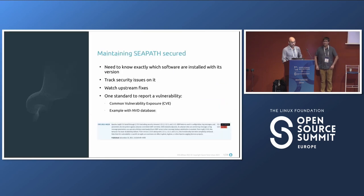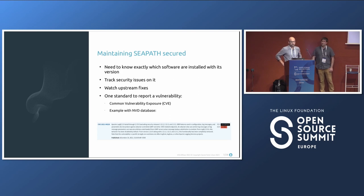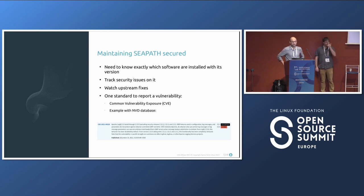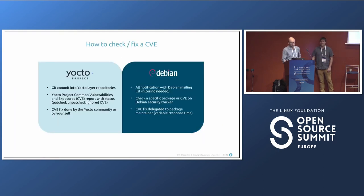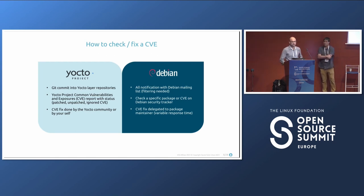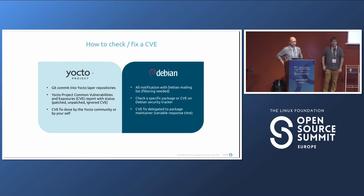We want to maintain C-Pass quality by tracking security issues and watching upstream fixes. Even with many tests, new CVEs always emerge. CVE stands for Common Vulnerability Exposure — the well-known Log4j CVE is a good example of a very critical one. For the Yocto project, we have an internal tool called CVE Check Class that connects to the NVD database to ensure that for certain packages and versions we have CVE status, and we can monitor, patch, or ignore CVEs.